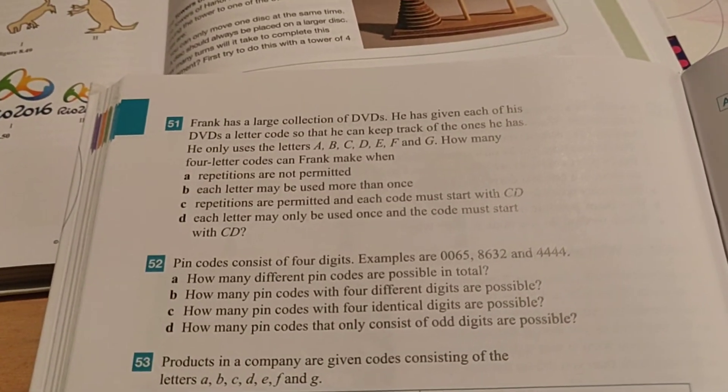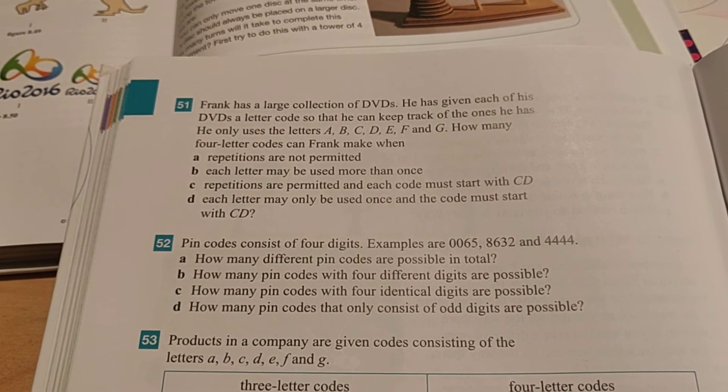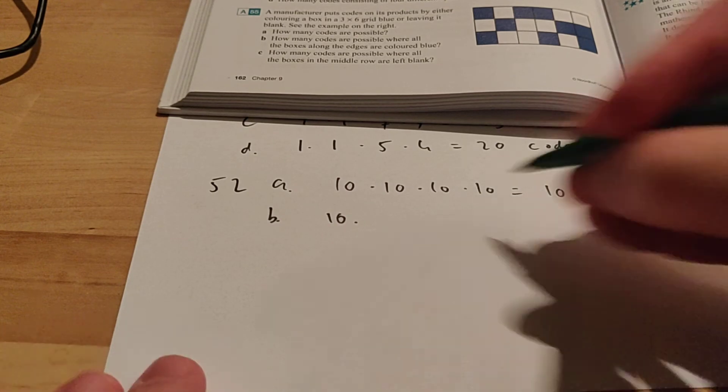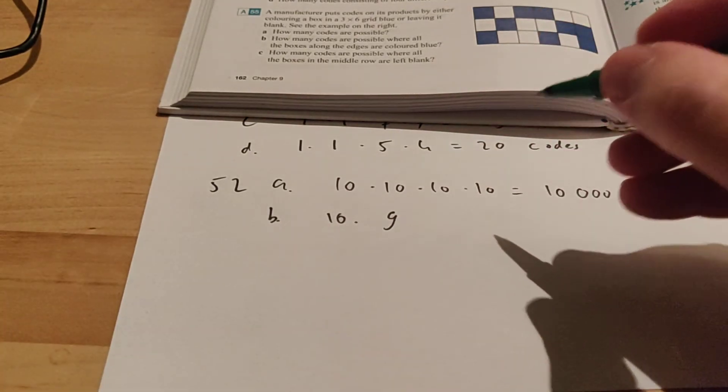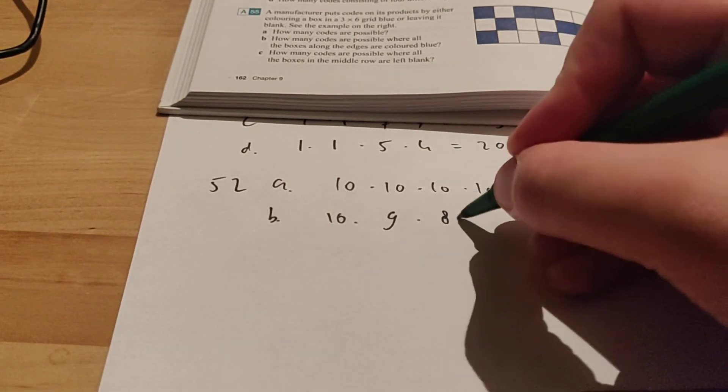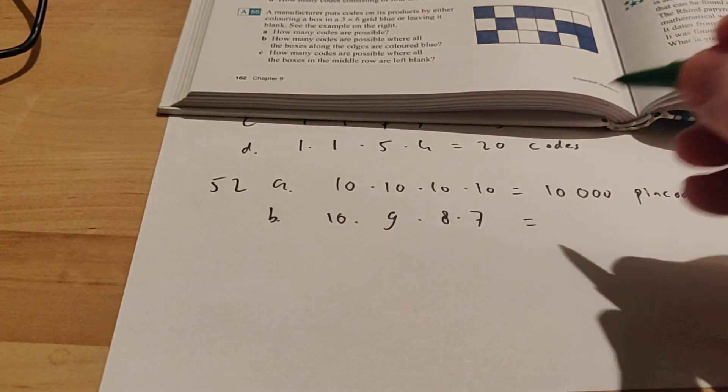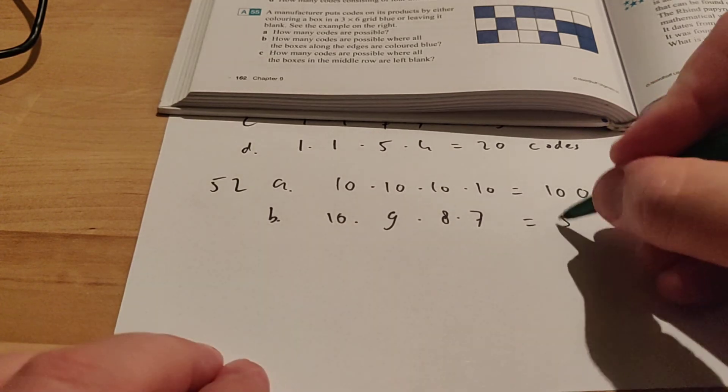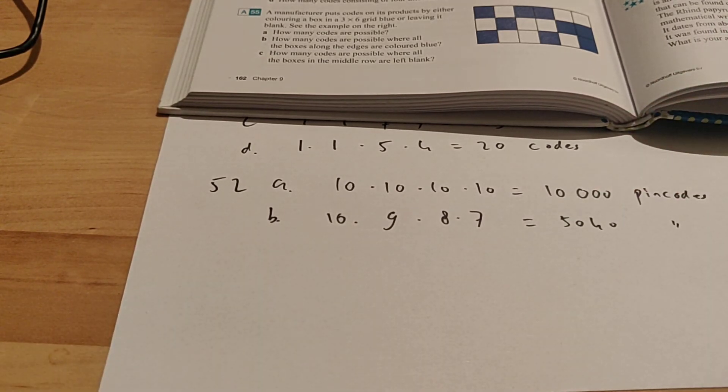Moving on to exercise B. It says how many pin codes with four different digits are possible. So now for the first digit, we have 10 things to choose from. But then one is gone. So now we have 9 options left. And then 8. And then 7. So the number of codes you can make is 10 times 9 times 8 times 7. So in this case, that's 5040 pin codes.